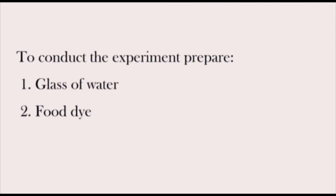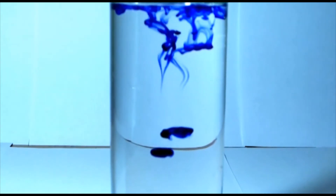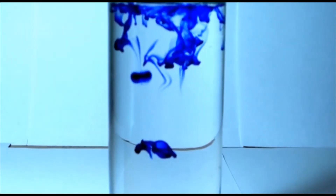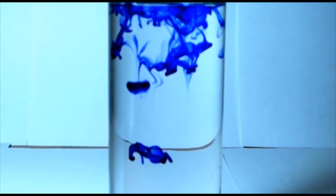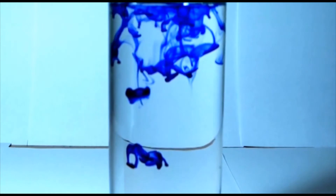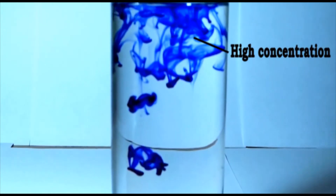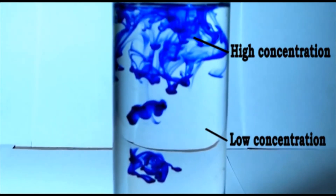In order to conduct the experiment, prepare a glass of water and food dye. Add a few drops of food dye into the water. As you can see, the dye starts to diffuse from its high concentration to its low concentration.